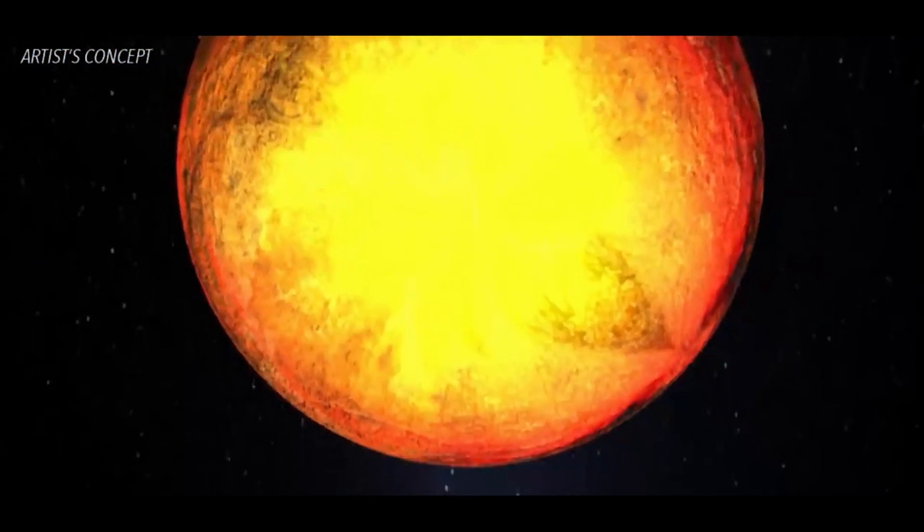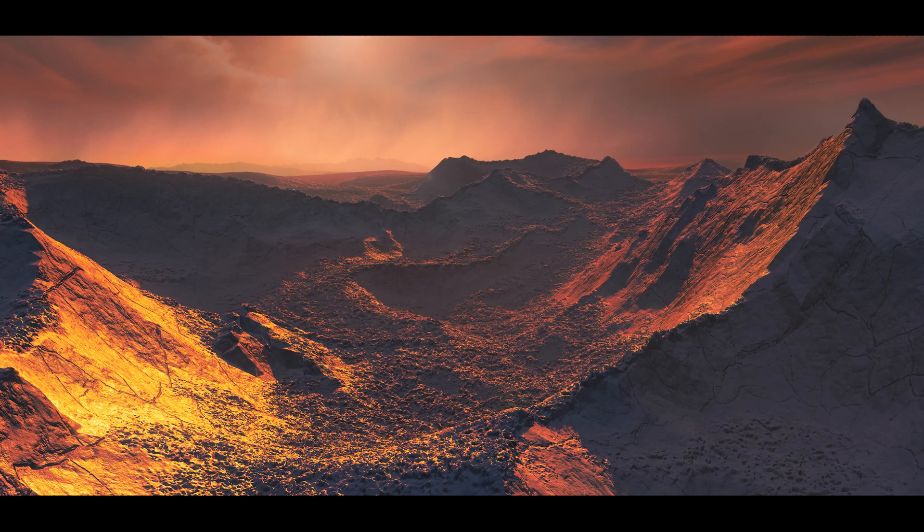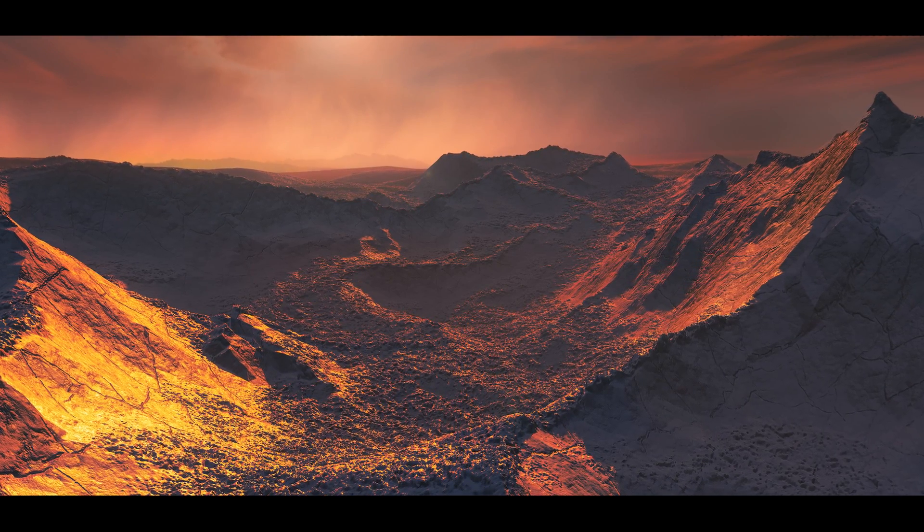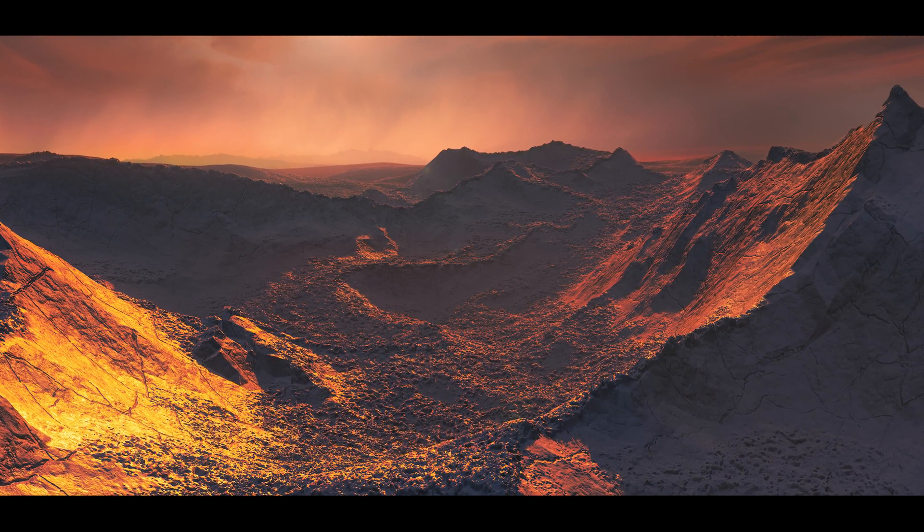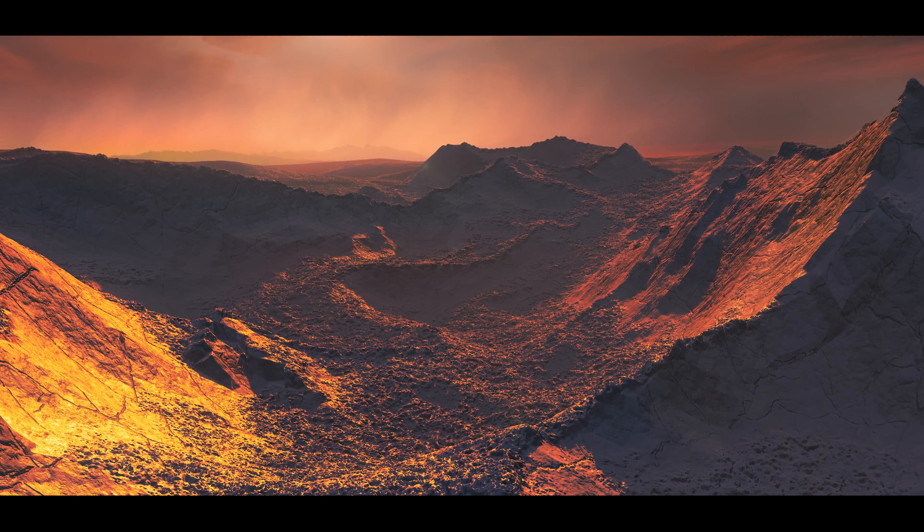Yet, this is not the most interesting thing. Korot 7b also has a diameter of only 1.7 Earth diameters, a mass of 4.8 Earth masses, with an average density of 5.6 grams per cubic centimeter, almost the identical value of our Earth. This planet thus belongs to the super-Earths.